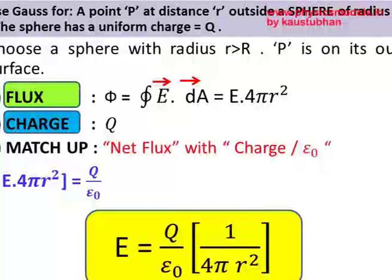So once again you find the flux, which is E into dA. In the case of a sphere the total surface area of the sphere integrated will be equal to 4πr². You find the charge, just q, you match them up, and you can easily derive the equation for the electric field strength.